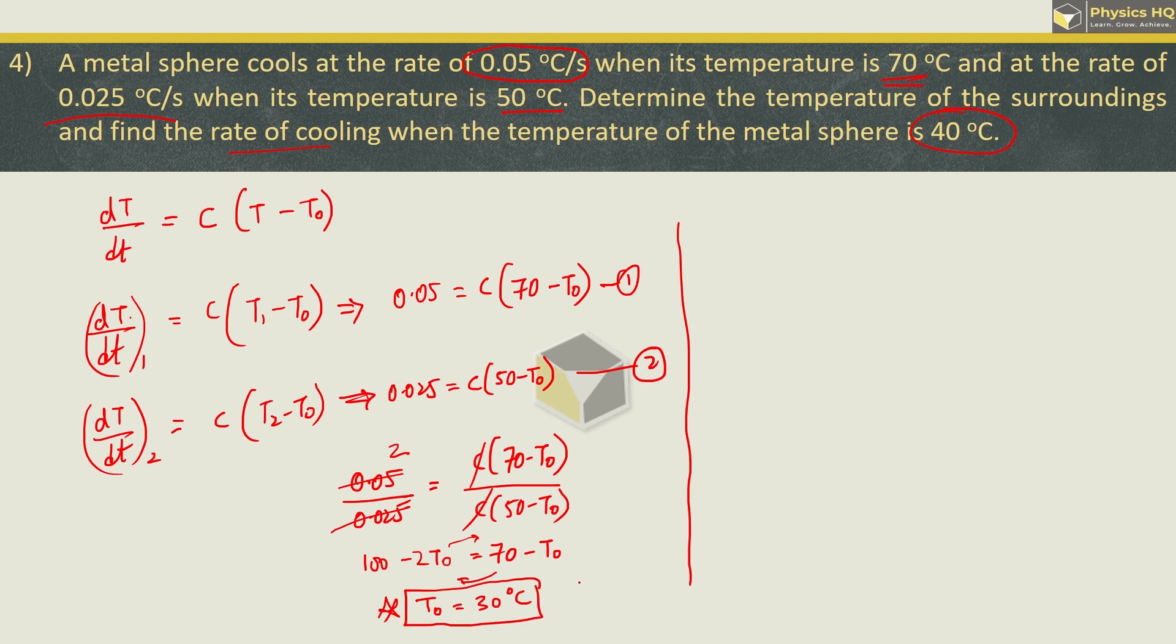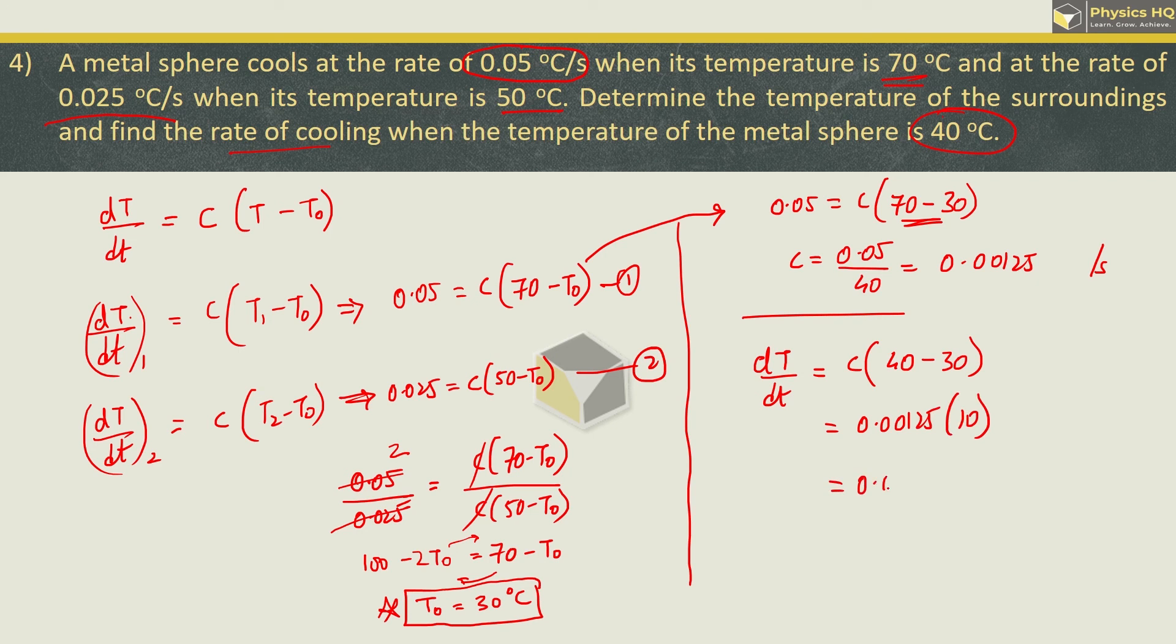Next, put this in the equation to find the value of C. So 0.05 equals C times 70 minus 30, which is 40. So we got C equals 0.05 upon 40, which gives 0.00125 per second. Now we are supposed to find out the rate of cooling for temperature 40, so that is 40 minus 30, and C value we just found is 0.00125 times 10, which gives the rate of cooling as 0.0125 degree Celsius per second. Hope you all understood this.